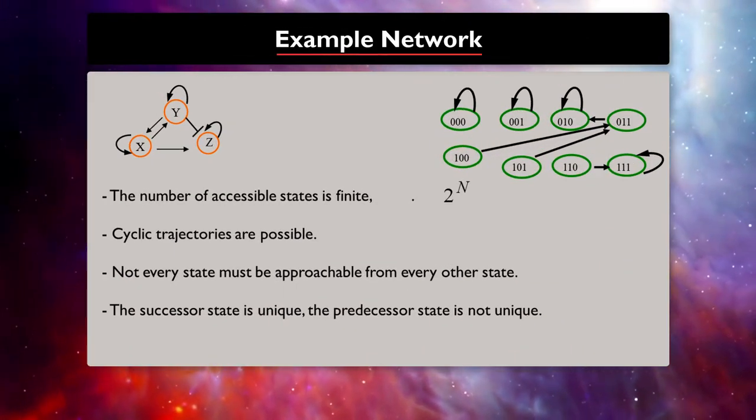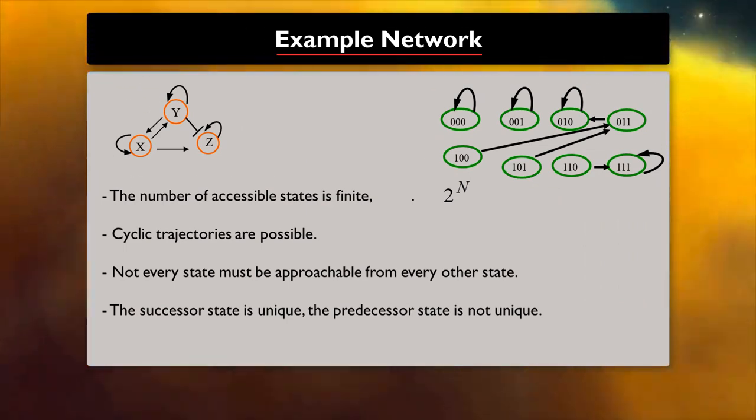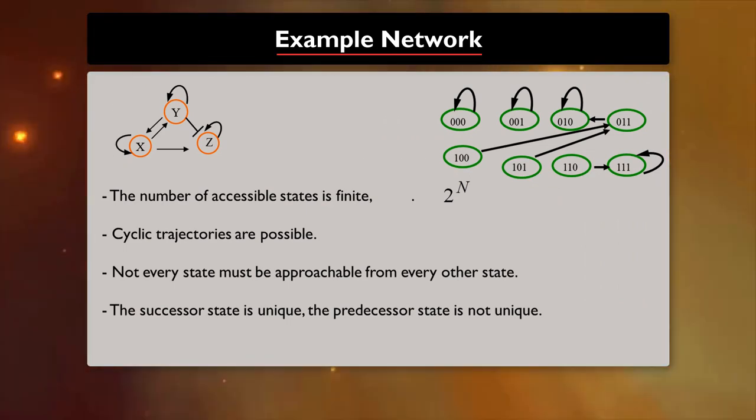We can see that the number of accessible states is finite, 2 power n, and cyclic trajectories are possible.